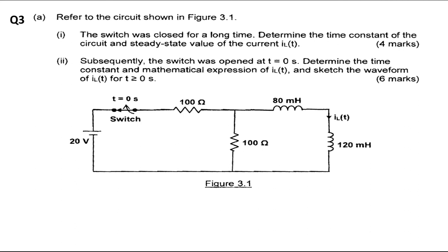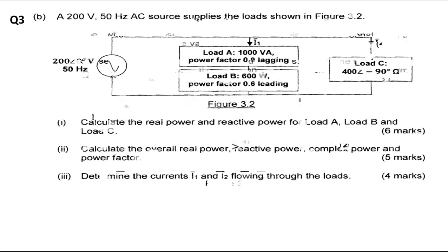Hi, we next look at question 3 part B. Now question 3 part B has the circuit with two branches, current I1 and current I2. Branch 1 has two loads, load A and load B, whereas branch 2 has load C.